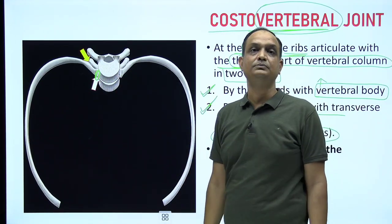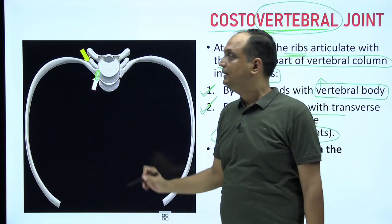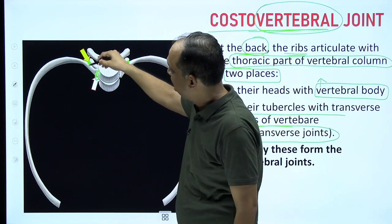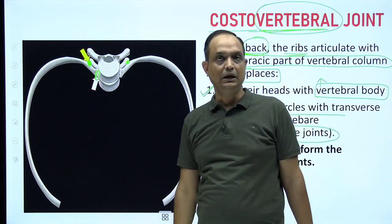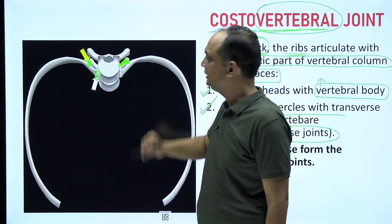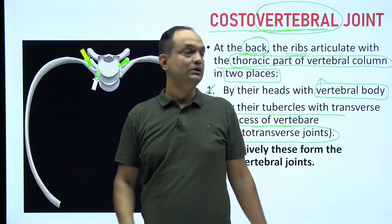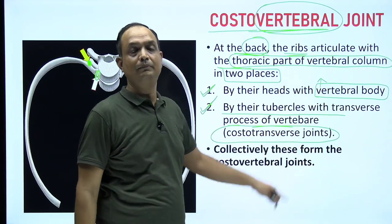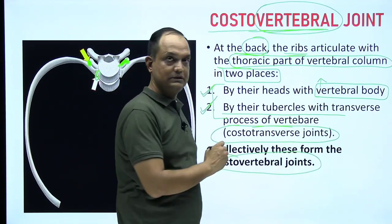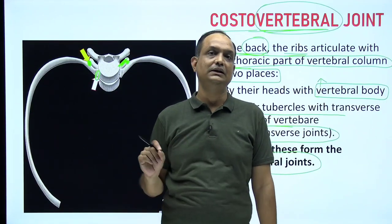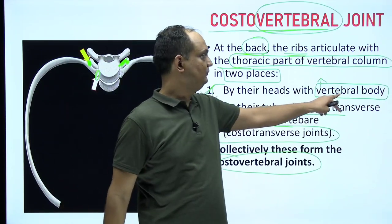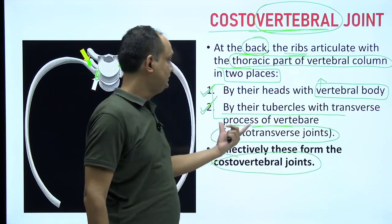There is one more joint on each side — between the rib tubercle and the transverse process — known as the costotransverse joint. Some books include both varieties under 'costovertebral joints,' so in an exam you can write both: the joint with the vertebral body and the joint of the rib with the transverse process.